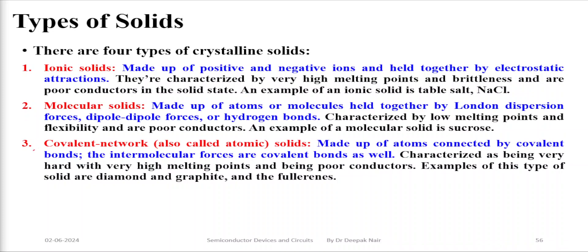The third type of crystalline solids are covalent network solids, also known as atomic solids. These are made up of materials bonded by covalent bonds and are also attracted by intermolecular forces generally developed due to those covalent bonds. Examples include diamond, graphite, and fullerenes. These materials generally have very high melting points and are also considered to be poor conductors of electricity.